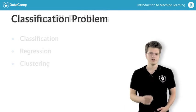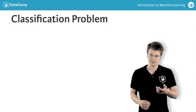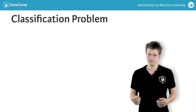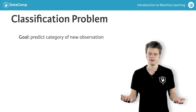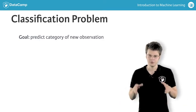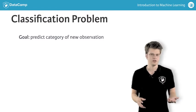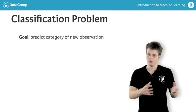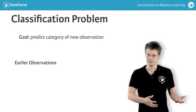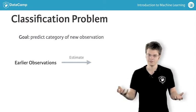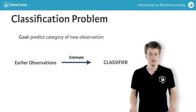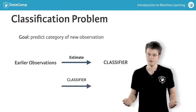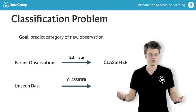First up is classification. A classification problem involves predicting whether a given observation belongs to a certain category. Remember how I compared machine learning to the estimation of a function? Based on earlier observations of how the input maps to the output, classification tries to estimate a classifier that can generate an output for an arbitrary input. A classifier can then label an unseen example with a class.